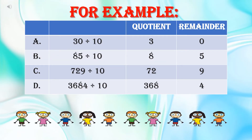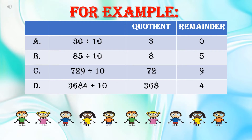Let's understand it with the help of some examples. Let's take 30 divided by 10. अब 30 में 0 ones place पर है और 10s place पर है 3। तो ones place पर जो digit है वो हमारा remainder होगा। So 0 is the remainder here, and the only digit left is 3, so 3 will be the quotient.